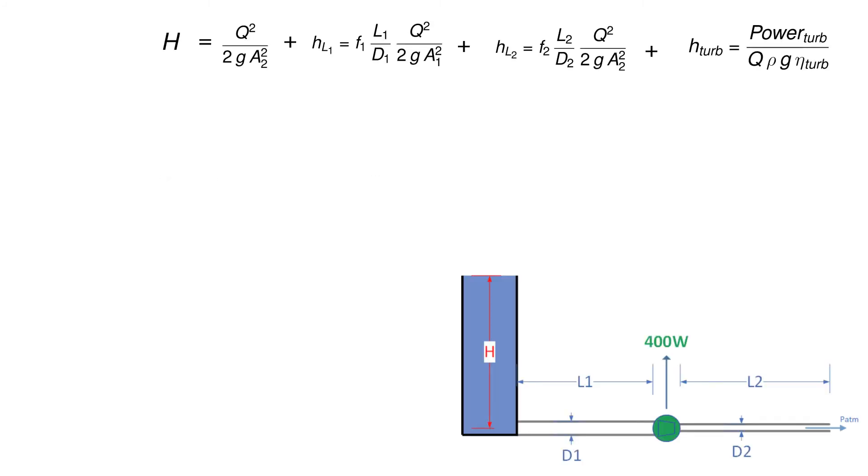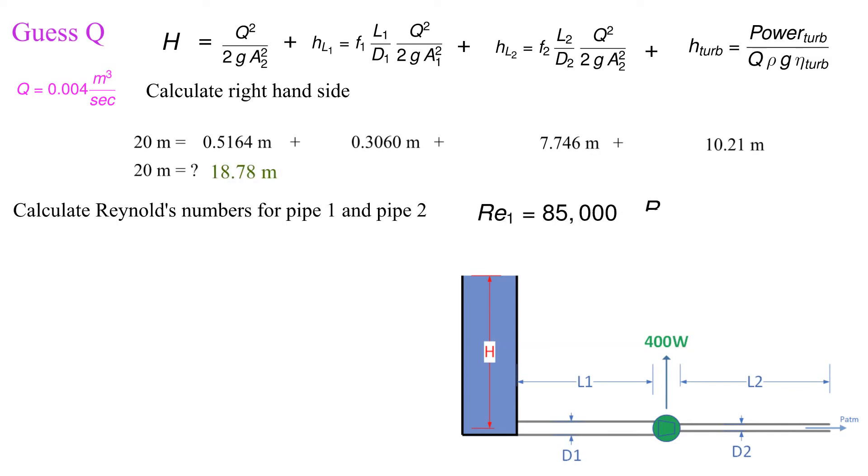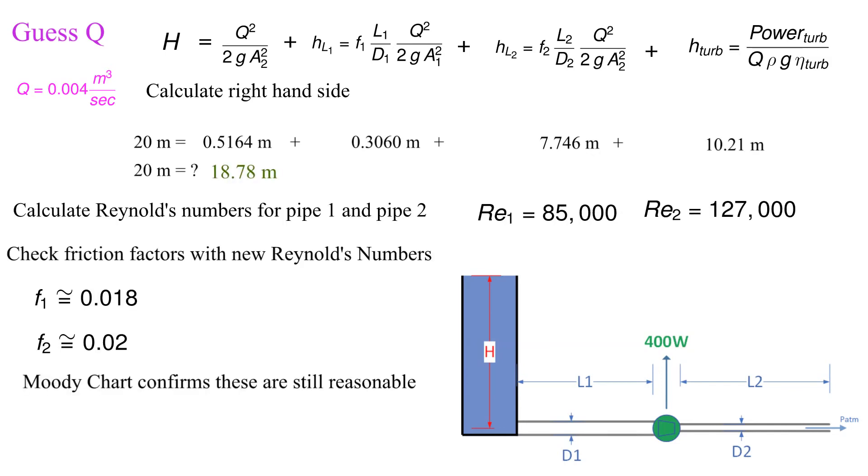For the next iteration let's go with 0.004 cubic meters per second. Following the same steps we see that we are still not balancing the equation. We should also note that our original friction factors are still reasonable with the updated Reynolds numbers. Spoiler alert, our initial guess of the friction factors are good, we'll never have to change them for this example. But be aware that is not always the case.